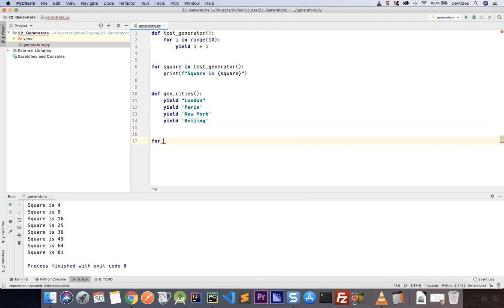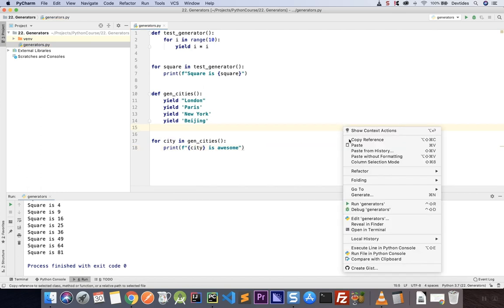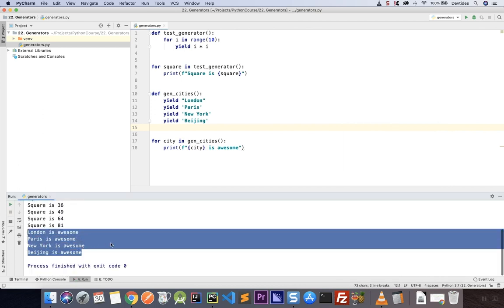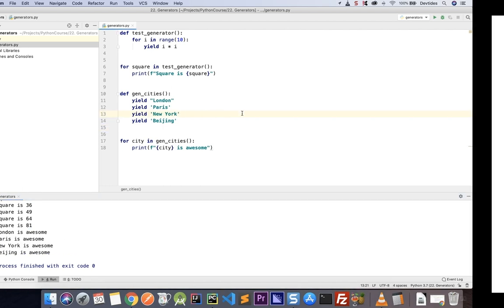And then I'm going to loop through these elements city in gen cities. And I'm going to print an F string. The city is awesome. So this is an F string, so I can put the variable here. So let's go ahead and run it. And we get our output with the cities that are generated by our function.